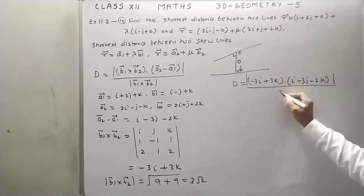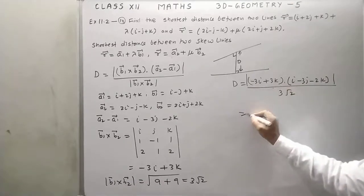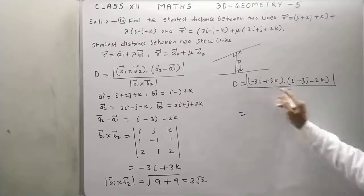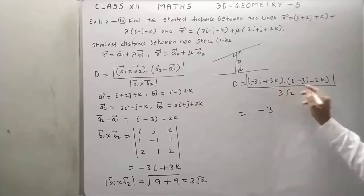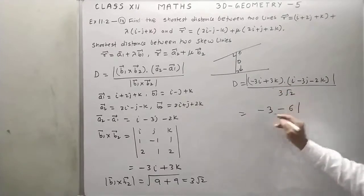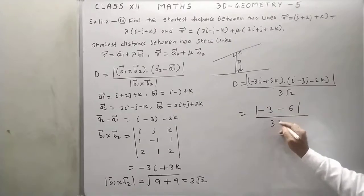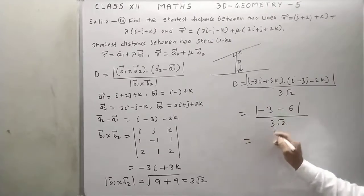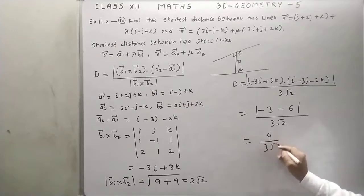Now calculate dot product: minus 3 and 3 is minus 9, this is minus 9 upon 3 root 2. We get magnitude of minus 9 means 9 upon 3 root 2, or you can say 3 upon root 2.